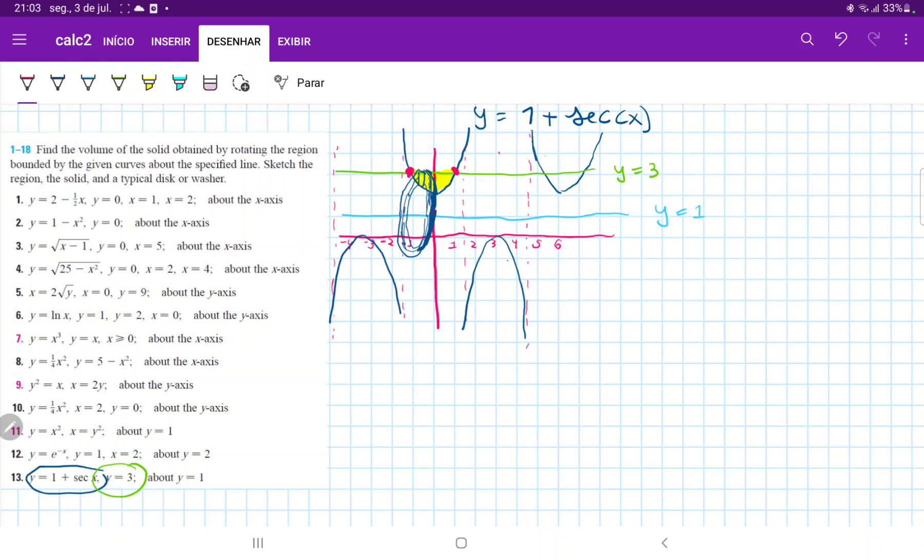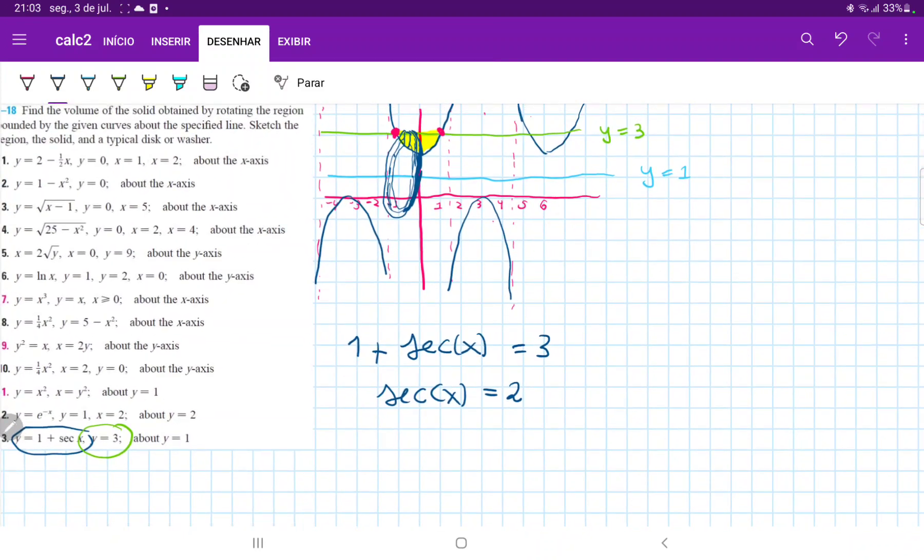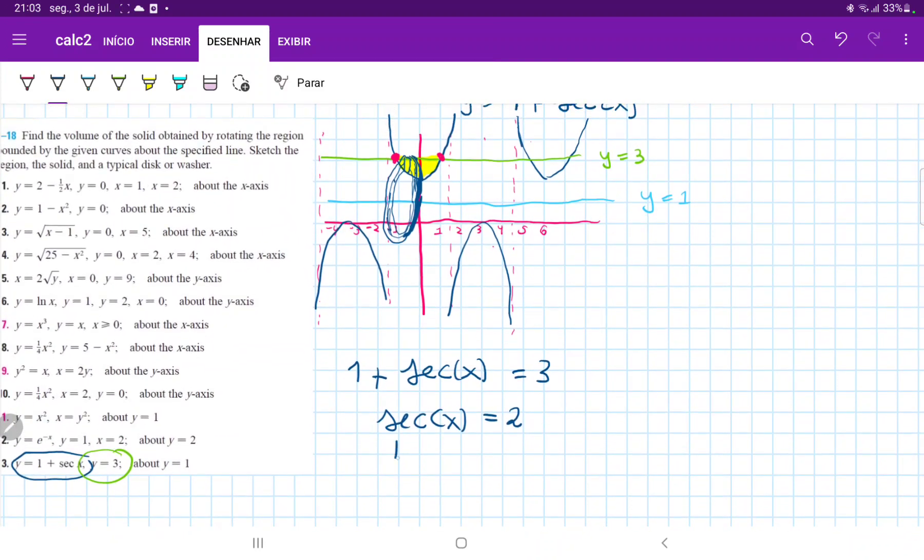So the first thing that we have to do is find the points of the intersection. So we're going to set these equations equal to each other to see where they touch. So we have 1 plus secant x is equal to 3, therefore secant x is equal to 2. And since secant is 1 over cosine, 1 over cosine x is equal to 2, and therefore cosine of x is equal to 1 half. Now, cosine of x is equal to 1 half at two different points.